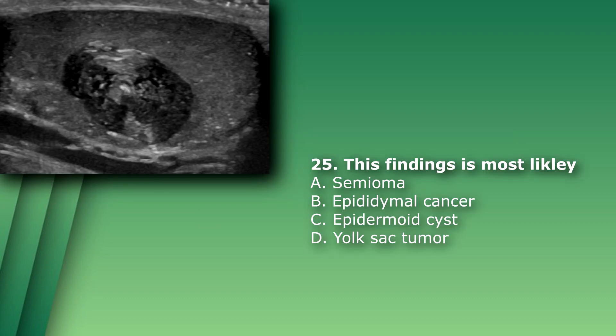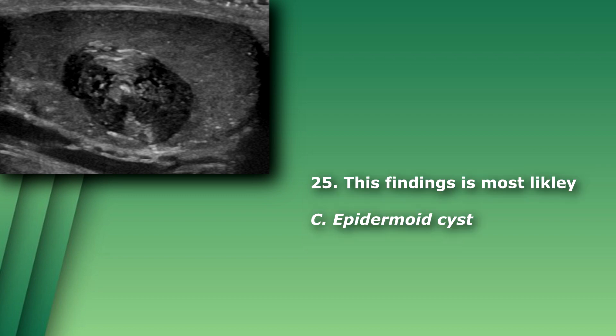Bonus image question: This finding is most likely A) a seminoma, B) epididymal cancer, C) epidermoid cyst, or D) yolk sac tumor. The answer is C) epidermoid cyst. An epidermoid cyst is a rare benign testicular tumor accounting for 1% of testicular tumors. It has been described as having an onion skin appearance because of concentric rings within the cyst.